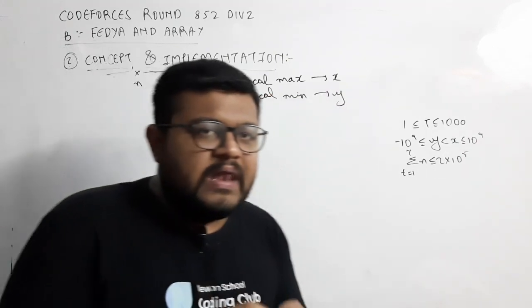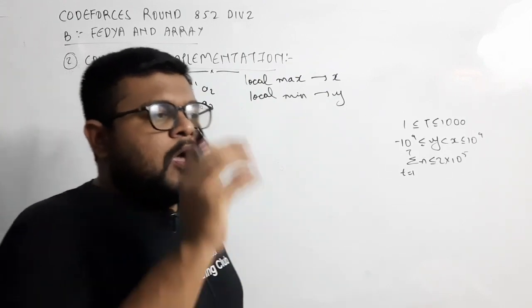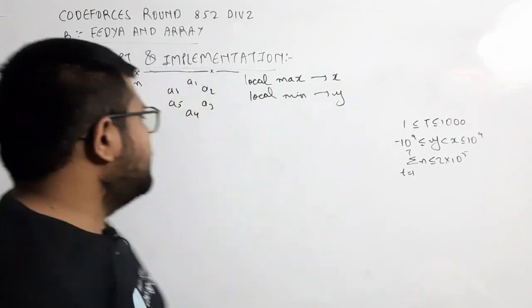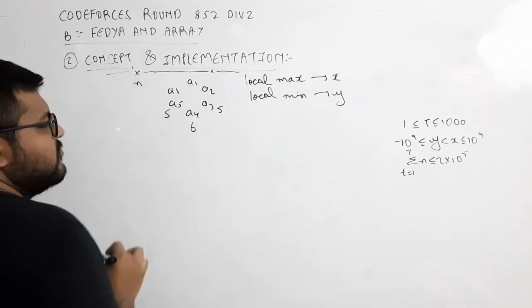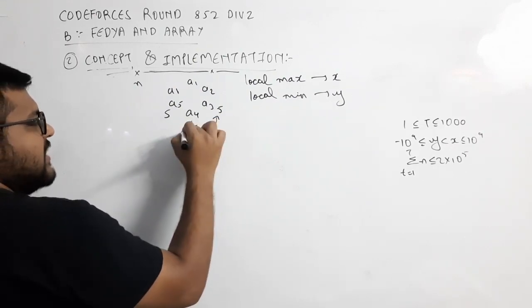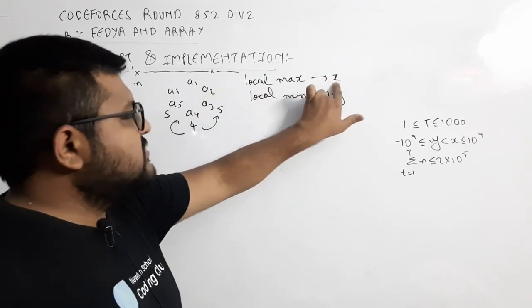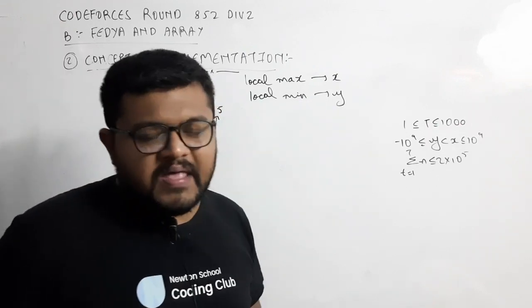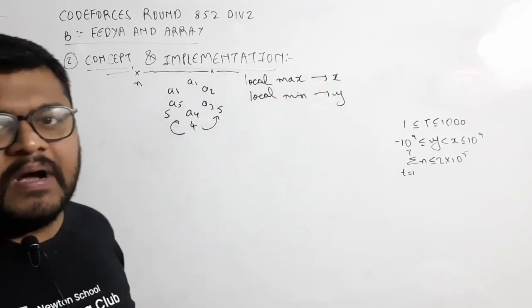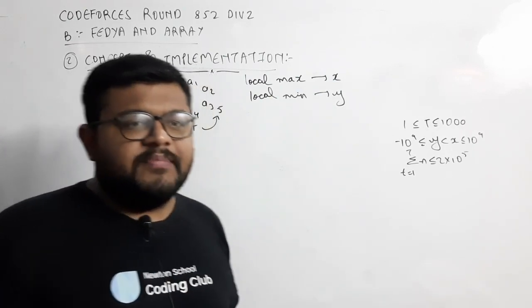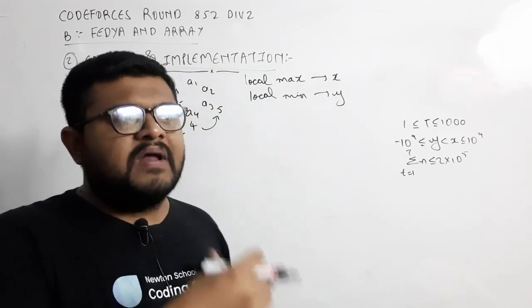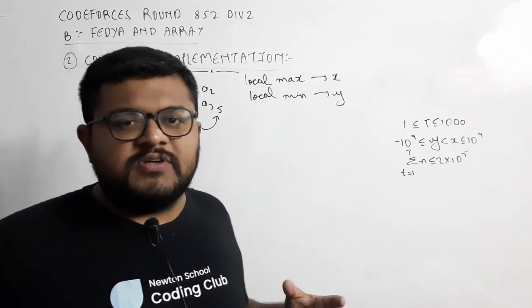Local maxima means: if any element has both its left and right neighbors with values one less than it — i.e., it is maximum in its local area — for example, if a4's value is 6, a3 is 5 and a5 is 5, then a4 is a local maxima. Similarly, local minima means both neighboring elements have greater values. The sum of all local maxima elements is x, and the sum of all local minima elements is y. We need an array of minimum length with absolute difference 1 between neighbors and local maxima sum = x, local minima sum = y.